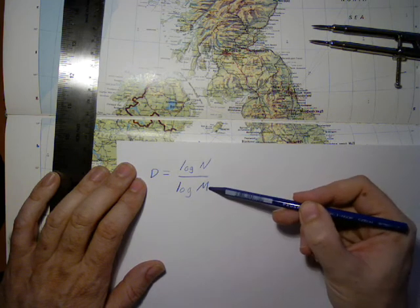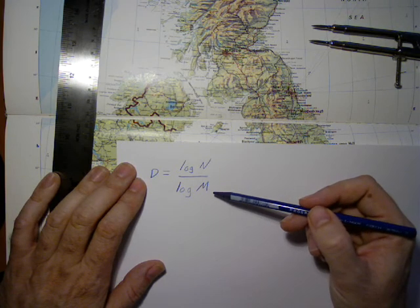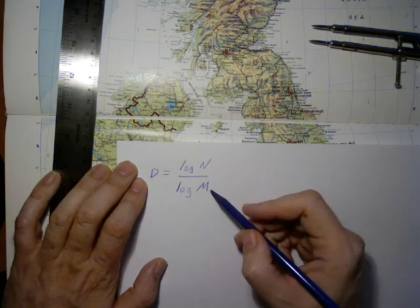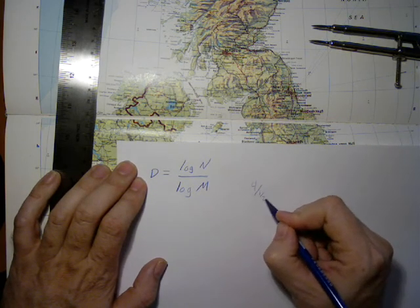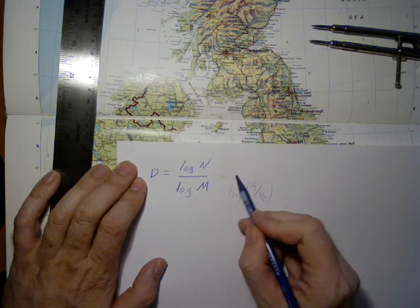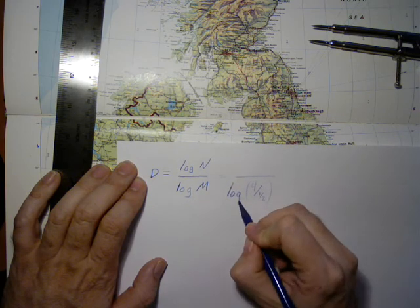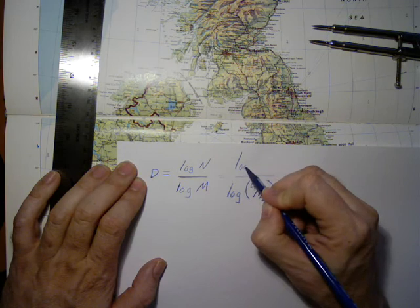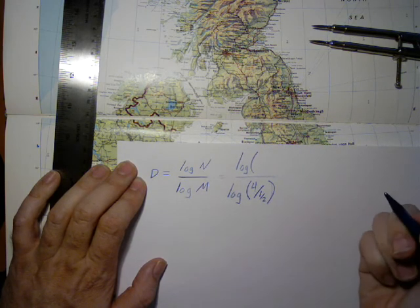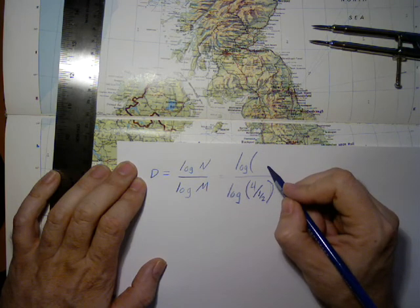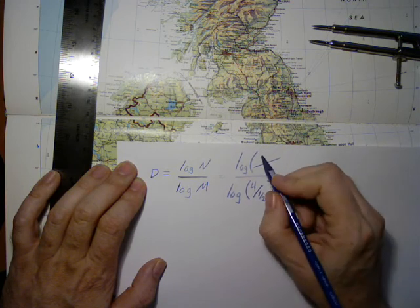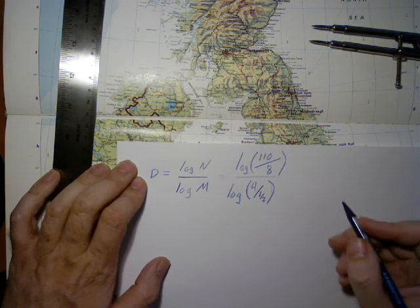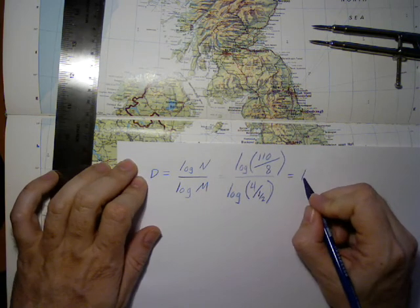So in this case, m refers to the magnification. We went from 4 inches to a half inch, so we will put log of 4 over one-half in the denominator. The length we calculated went from a mere 8 to 110. This gives us 1.26.